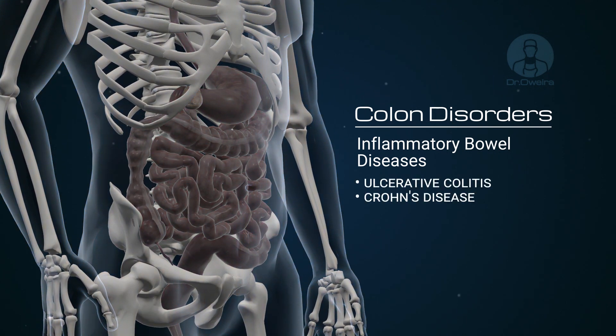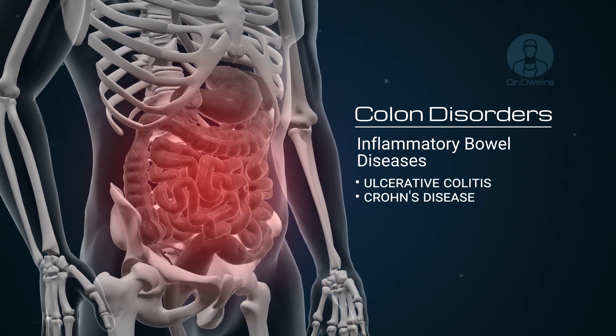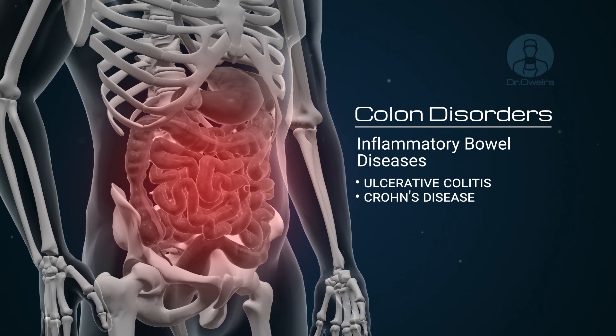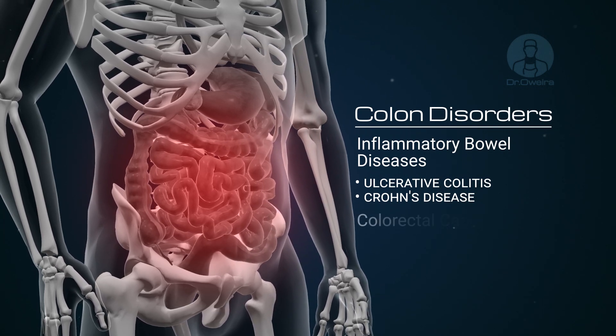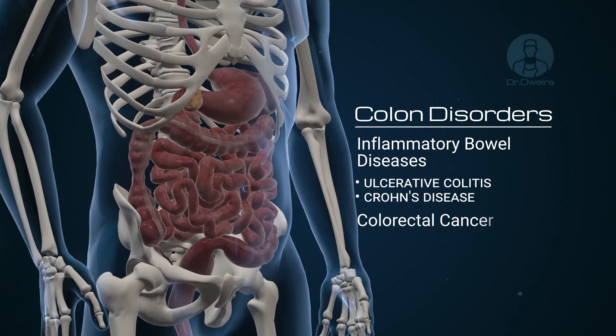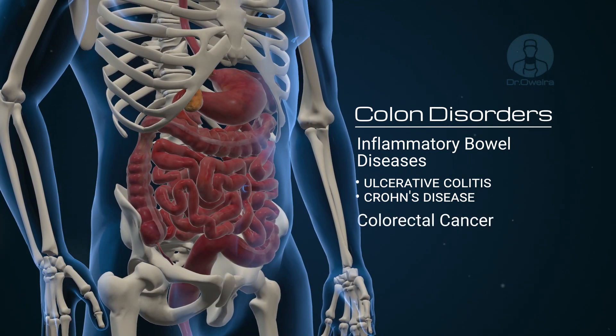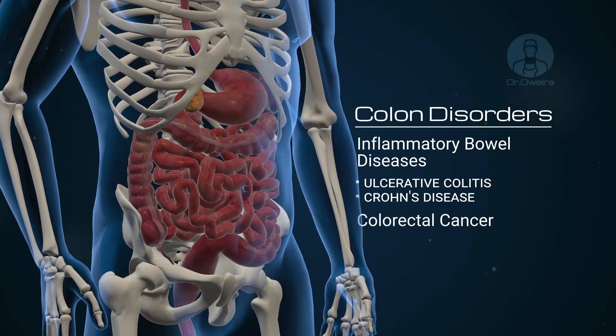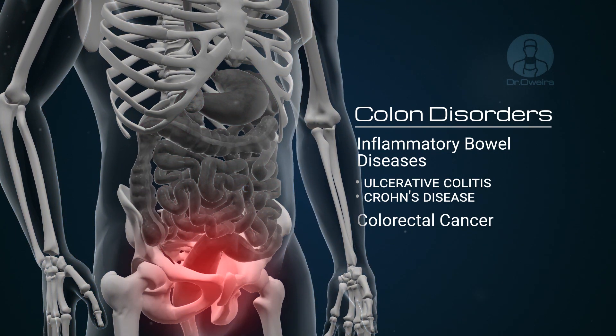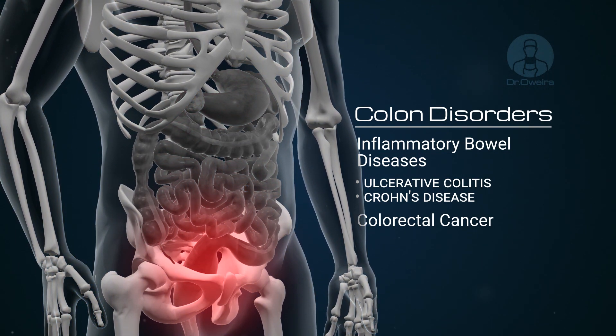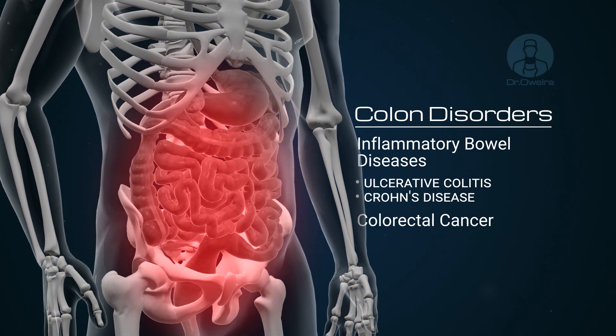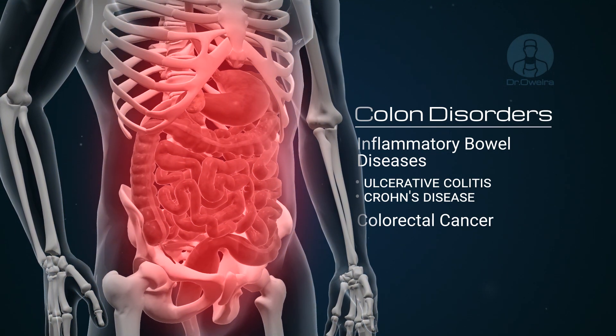which could cause cramps like pain in the middle of the abdomen. Colorectal cancer is one of the most common tumors, which starts in the rectum or the colon and might spread to other parts of the body.